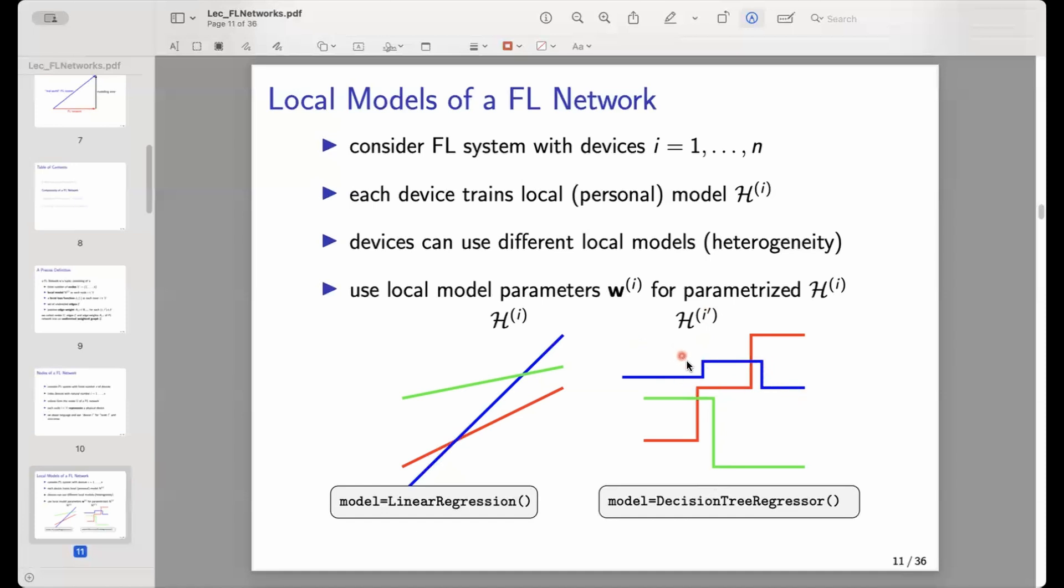You will also implement this. These are mathematical abstract concepts, but we will also see how to bring them to life, how to implement them. For example, in Python, you can implement this linear model or work with a linear model using this LinearRegression class. Similarly, you can use a DecisionTree class to represent and work with a decision tree model. You will implement those different models in the assignments actually during the course.